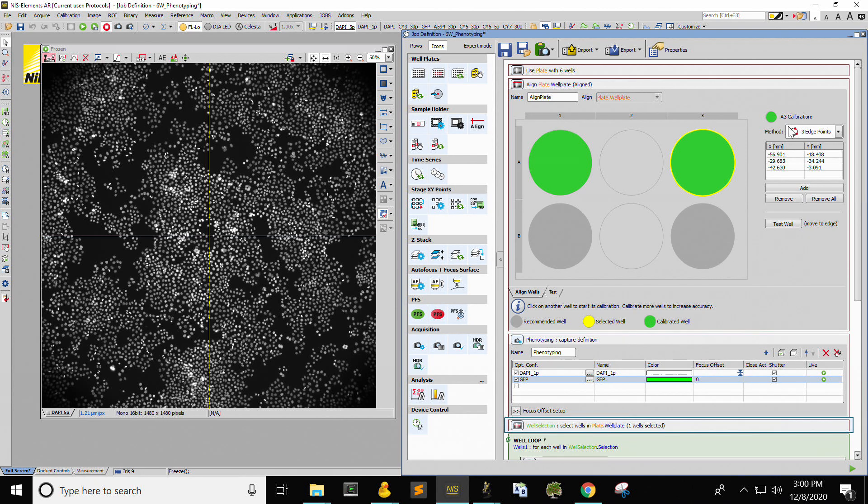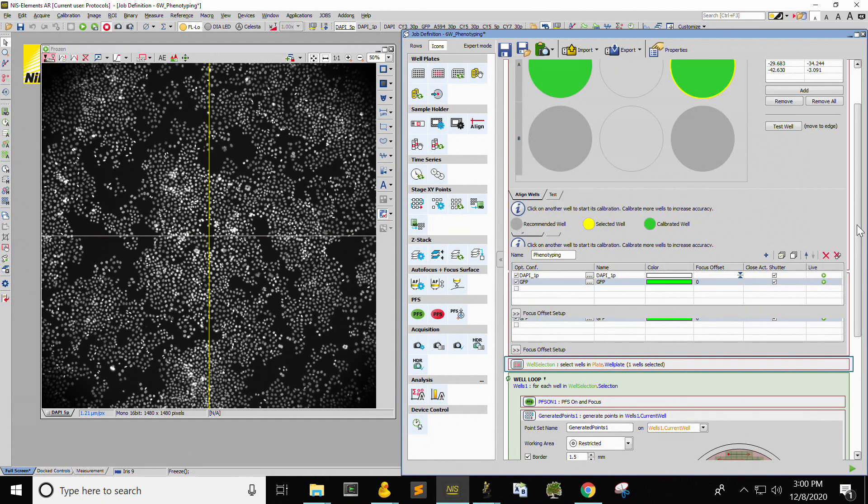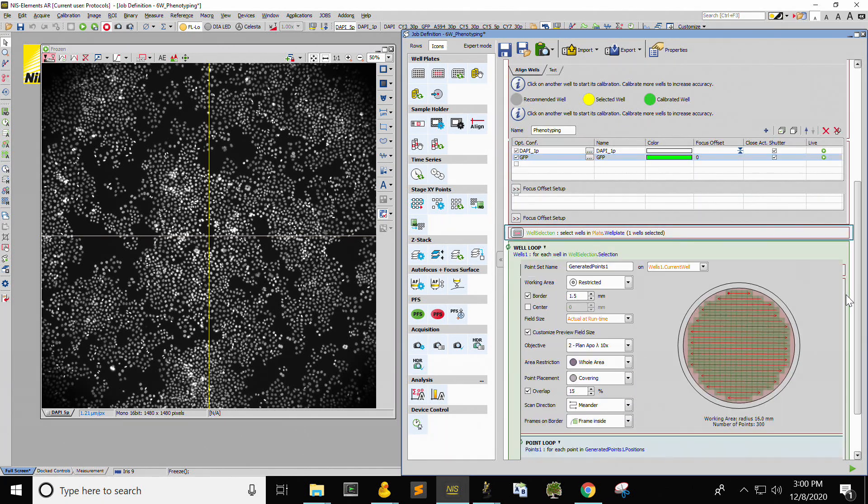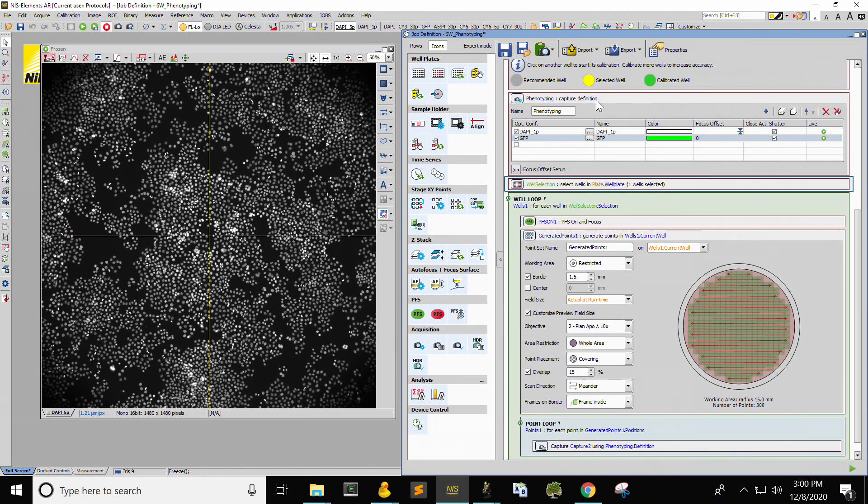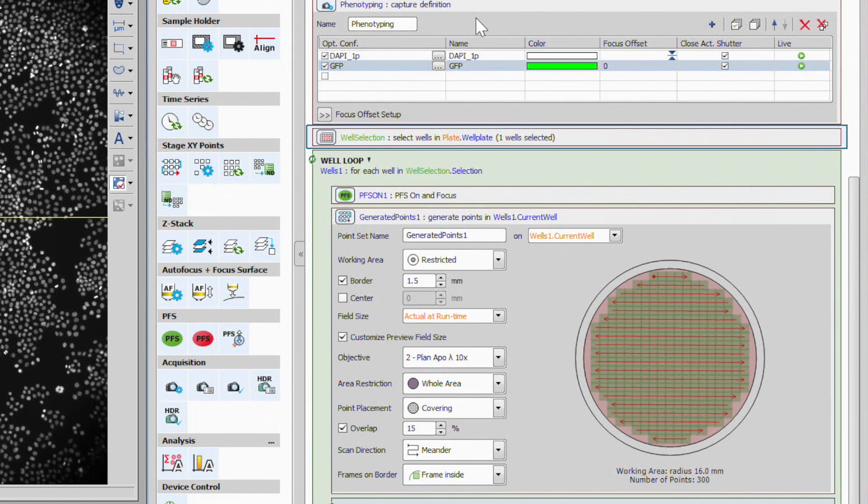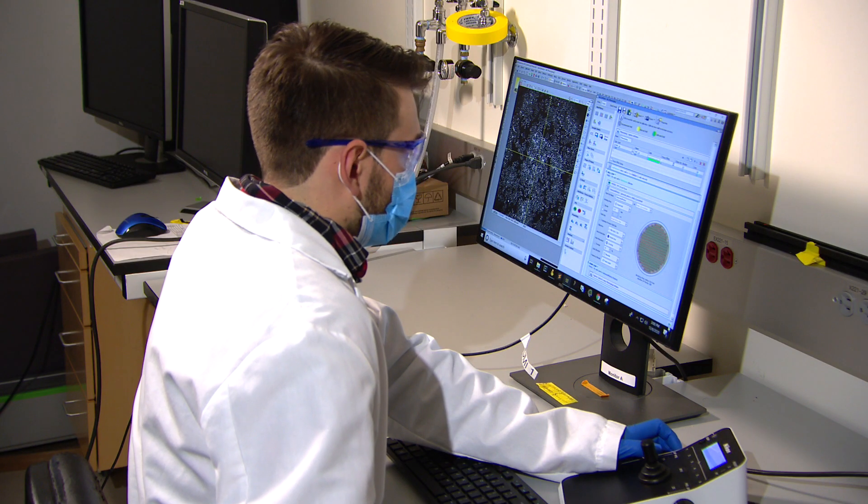For the first round of imaging, which is generally phenotyping, configure a phenotyping job as shown. Align the plate using three edge points in two or more wells. Set up the channels and imaging grid as needed. Focus the sample and initiate imaging.